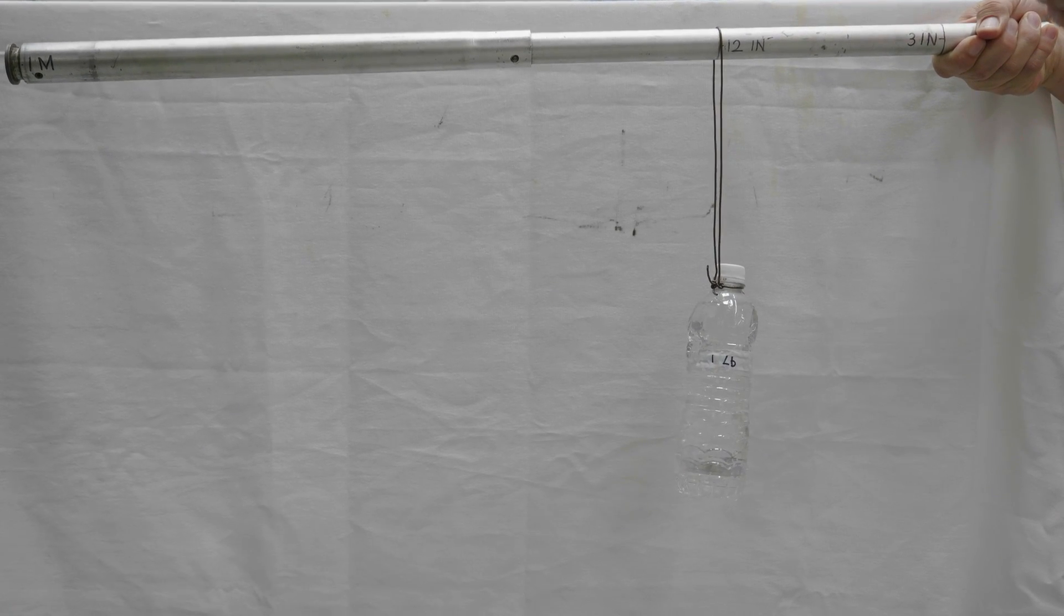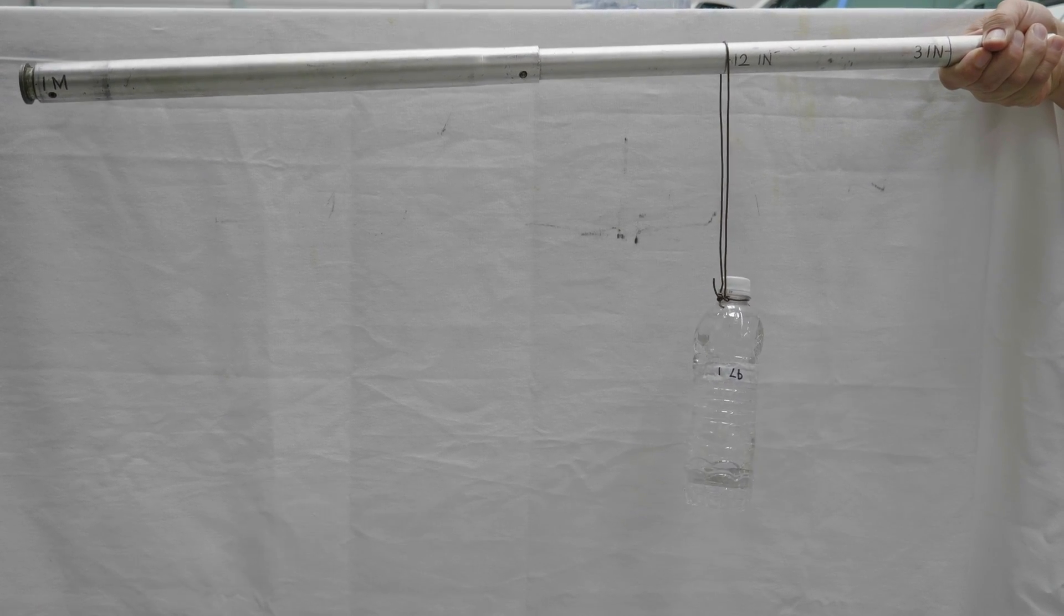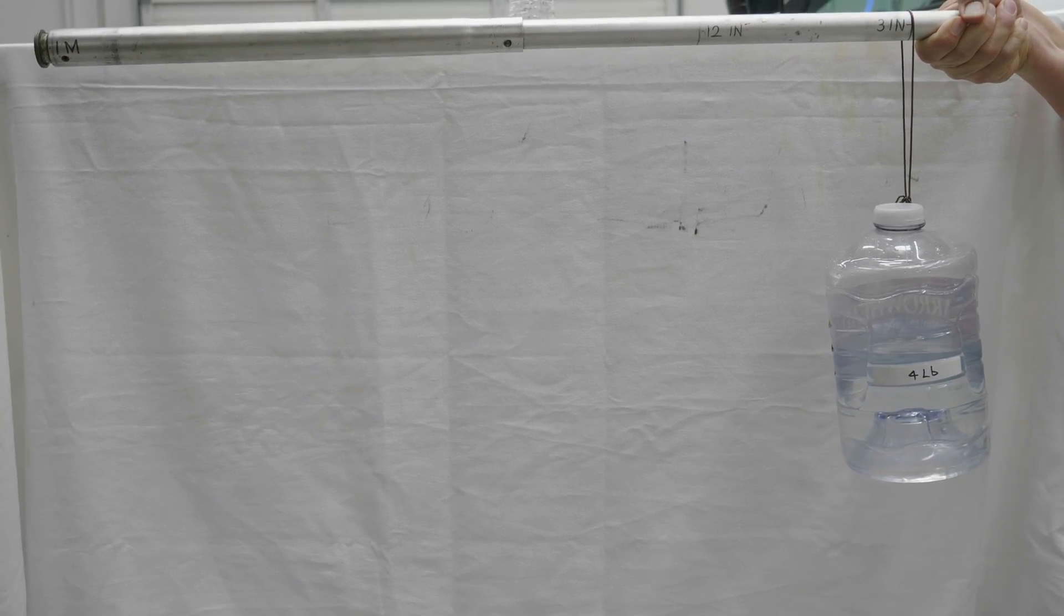One foot-pound, that is one pound at 12 inches, is the same as four pounds at three inches from your pivot point.